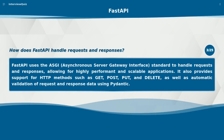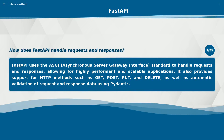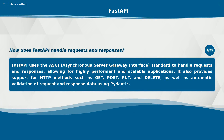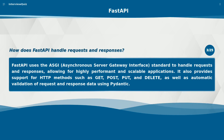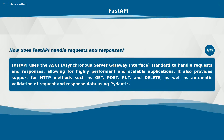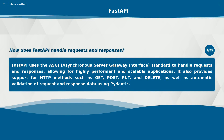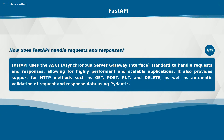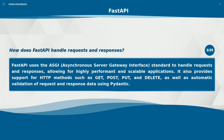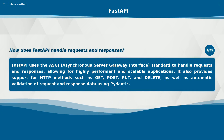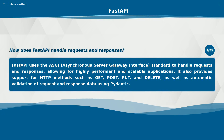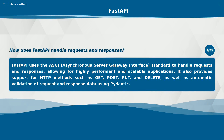How does FastAPI handle requests and responses? FastAPI uses the ASGI (asynchronous server gateway interface) standard to handle requests and responses, allowing for highly performant and scalable applications. It also provides support for HTTP methods such as GET, POST, PUT, and DELETE, as well as automatic validation of request and response data using Pydantic.